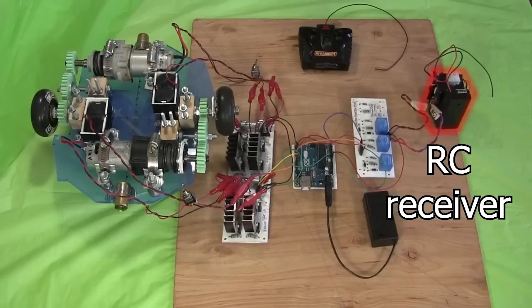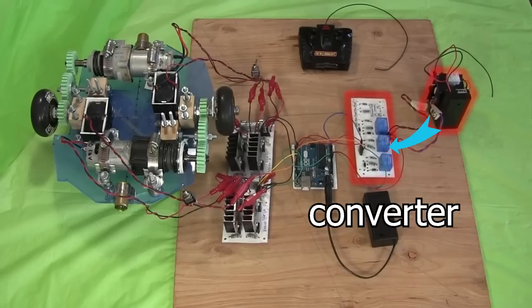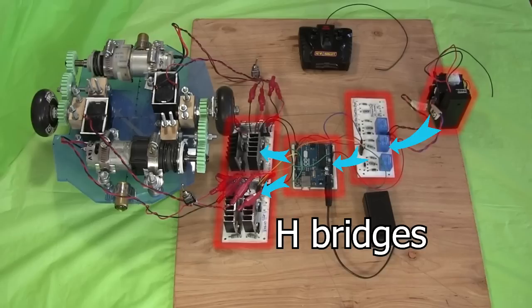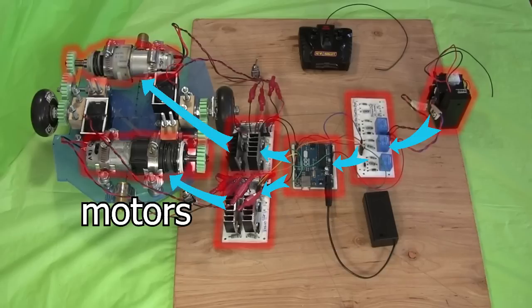Here's all that circuitry the last time it was all spread out. This is the remote control receiver, whose output gets converted by this homemade circuit to something this Arduino can understand. The Arduino then uses that to control these two homemade H-bridge circuits, which then drive the two motors.